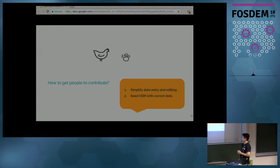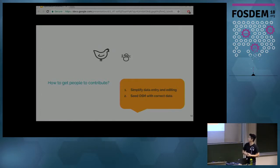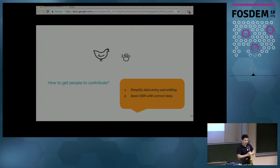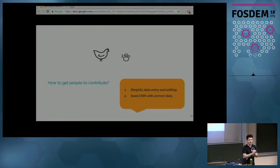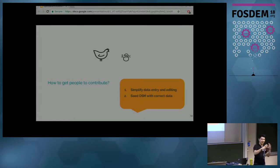My goal is to simplify data entry so information flows into OpenStreetMap, and secondly to seed OpenStreetMap with correct data. I'm planning to scrape the Mountain Project website — or negotiate with them to open up their data — so people have data to work with and can continue to improve it.